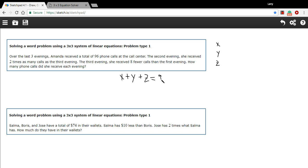Now, let's see what we can do with these other facts. Here, it says the second evening, so that's what we're calling Y, she received two times as many calls as the third evening. That's what we're calling Z. So I could write Y, the number of calls on Y, is two times the number of calls on Z. So there's an equation. It doesn't have to have all three variables to count. And let's see.